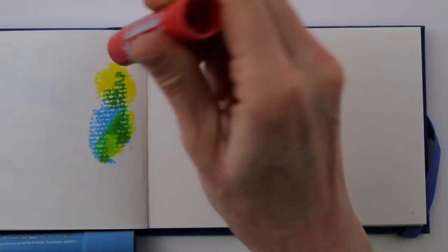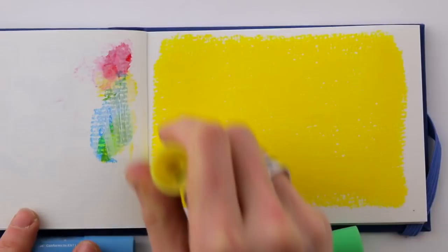You can layer the colors or mix them while they're still wet. At first the gouache feels greasy on the paper, but if you let it sit for just a few minutes, it'll dry completely and it won't smudge.